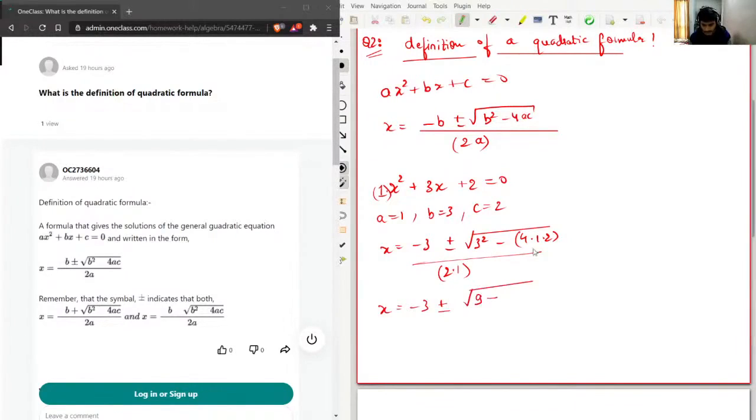Will be 9 and this will be 4 to the 8 over 2. So this will become 1 and square root of 1.